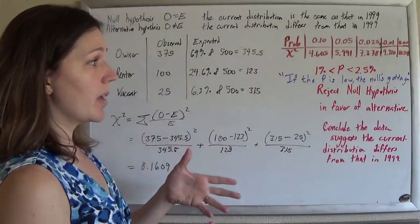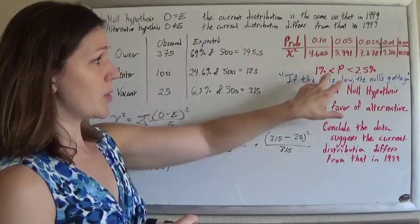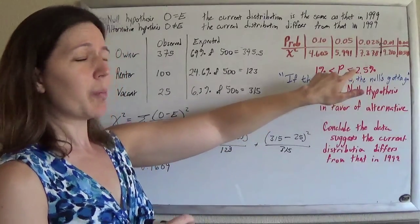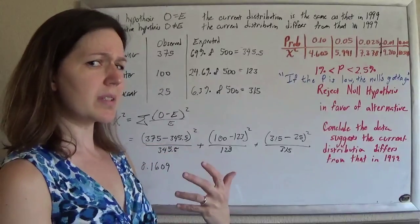So that means that the probability of getting the thing we got based on chance alone is relatively small. It probably wasn't just chance that we got such different numbers. There was probably something at work here.